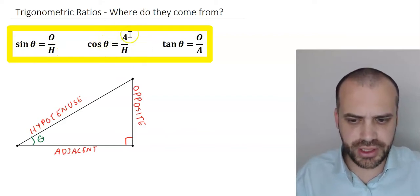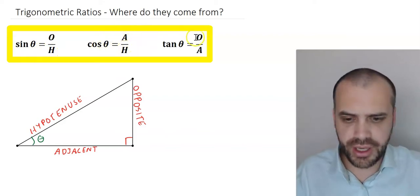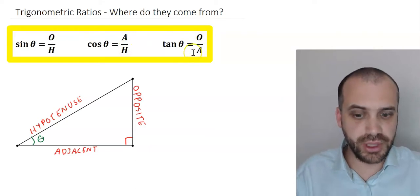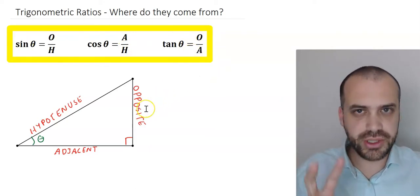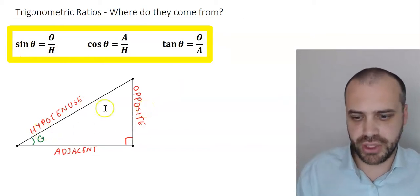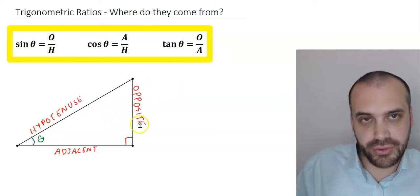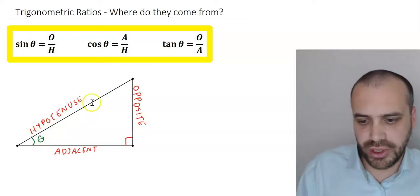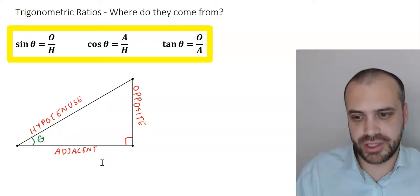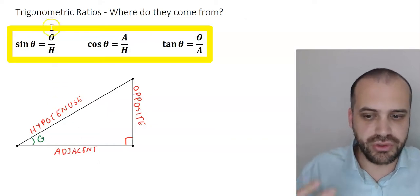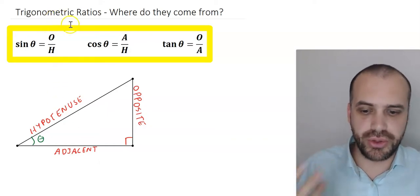As long as I know two of the things in this formula I can find the third thing. In fact, using these, as long as I know two bits of information about this triangle - the length of one of the sides and the angle, or the length of two of the sides - I can find all of the other stuff. And that's why these trigonometric ratios are so useful.